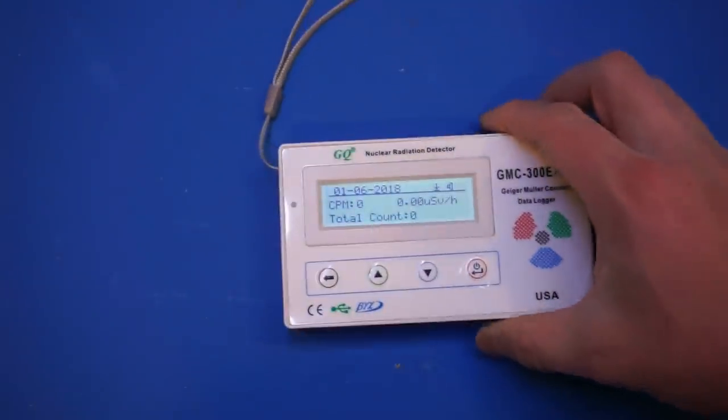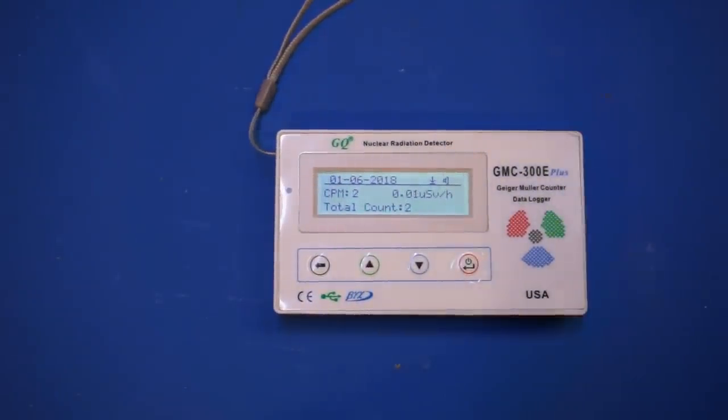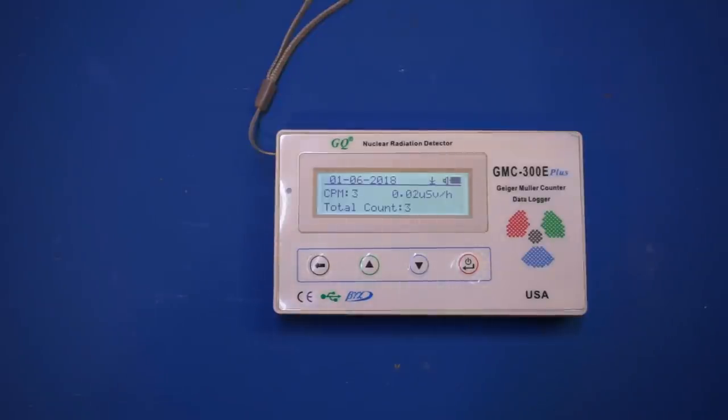So let me turn on the Geiger counter. And by the way, let me put this down so that you can see what is the radiation level of the environment. And for a typical environment, the background radiation should be less or at around 0.1 microsieverts per hour.